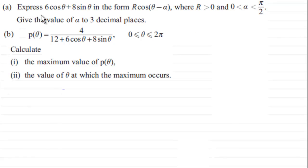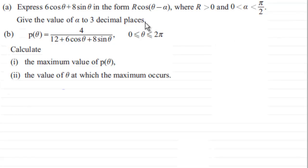In this example we've got to express 6cosθ + 8sinθ in the form r·cos(θ - α), where r is greater than zero and α is an angle greater than zero but less than π/2, measured in radians. We've got to give the value of α to 3 decimal places, and then it will go on to ask us some other parts about this function p(θ). If you'd like to have a go, pause the video and try it now.